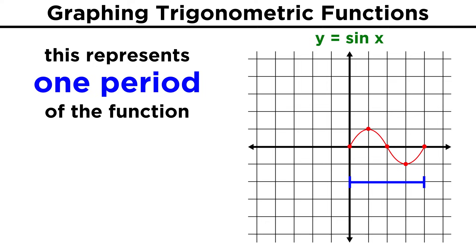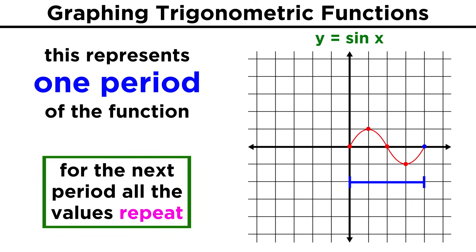So there is the graph of y equals sine x for one period of the function. Once we get to two pi radians, it's the same as being at zero, and when we enter another period of the function, all of the values will repeat. That's what makes this a periodic function. If we graph multiple periods of the function, it looks like this, and we can clearly see its cyclical nature.